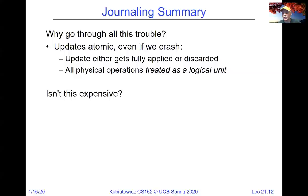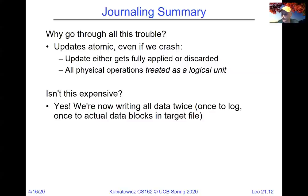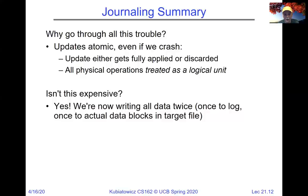Isn't this expensive? Yes — we're now writing all the data twice, once to the log and once to the actual data blocks in the target file. One thing we can do if we're really paranoid and want all data written twice is have a separate disk for the log. Notice the log is actually being written totally sequentially, operating at the highest bandwidth the disk can support. The log can be pushed out potentially a lot faster than you can actually write data to the file system. If you have two separate disks — one for the journal and one for the file system — this expense of writing twice can be fully overlapped and perhaps not even noticeable from a performance standpoint.